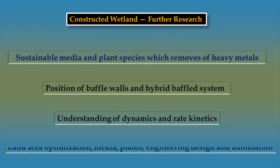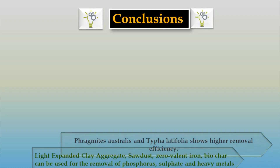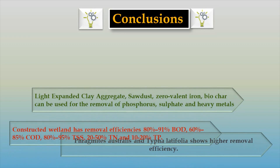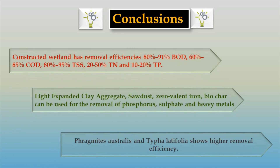Various research studies have already been carried out in the field of constructed wetlands, but further research is still required as per the review outcome. A constructed wetland can be adopted for the treatment of different types of wastewater. Constructed wetlands have removal efficiencies of 80–91% BOD, 60–85% COD, 80–95% TSS, 20–50% total nitrogen, and 10–20% total phosphorus.